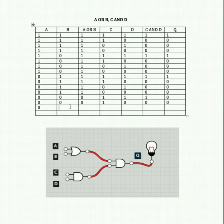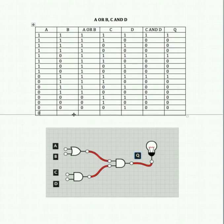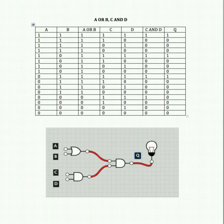We're into our final two rows. Turn off A, B, C, but turn on D. 0 and 0 into the OR gate gives us 0. 0 and 1 into the AND gate gives us 0 — an uneven input, so that's off. Finally, turn all inputs off: two negative inputs into an OR gate is 0, two negative inputs into an AND gate is 0, so the output at Q is 0.